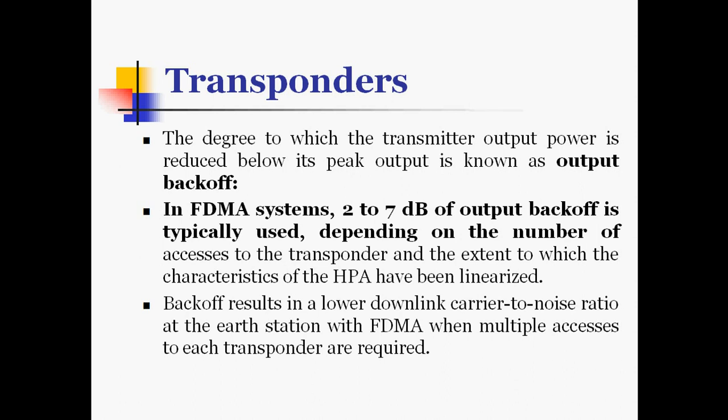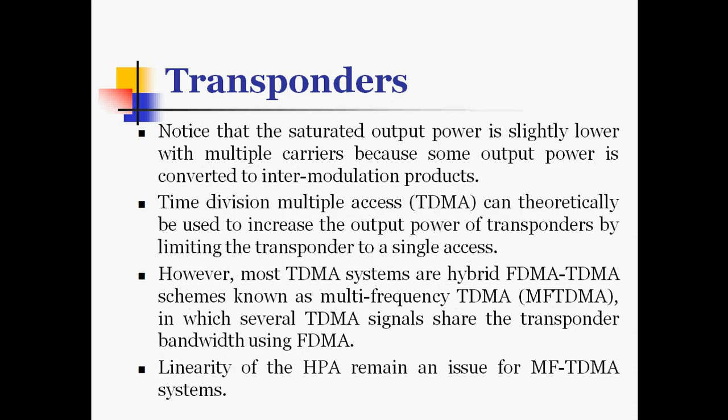Backoff results in a lower downlink carrier-to-noise ratio at the earth station with FDMA when multiple accesses to each transponder are required. The saturated output power is slightly lower with multiple carriers because some output power is converted to intermodulation products. Time division multiple access can be used to increase output power of transponders by limiting the transponder to single access. Most TDMA systems are hybrid FDMA-TDMA schemes known as multi-frequency TDMA, in which several TDMA signals share transponder bandwidth using FDMA.